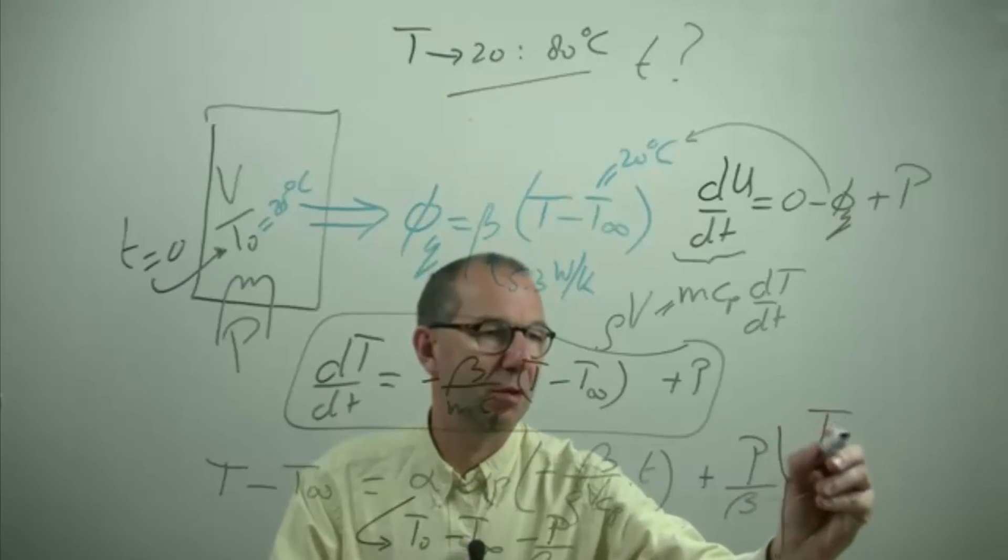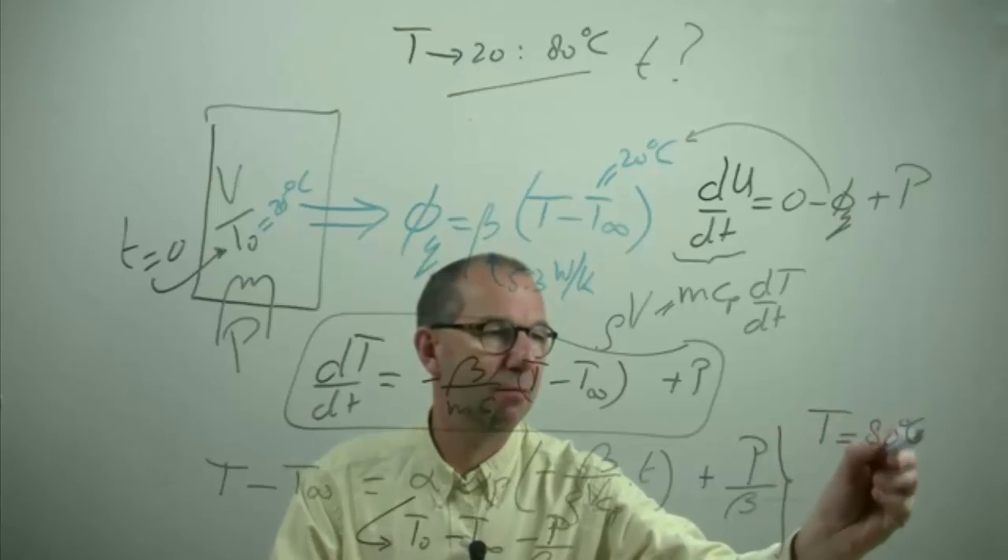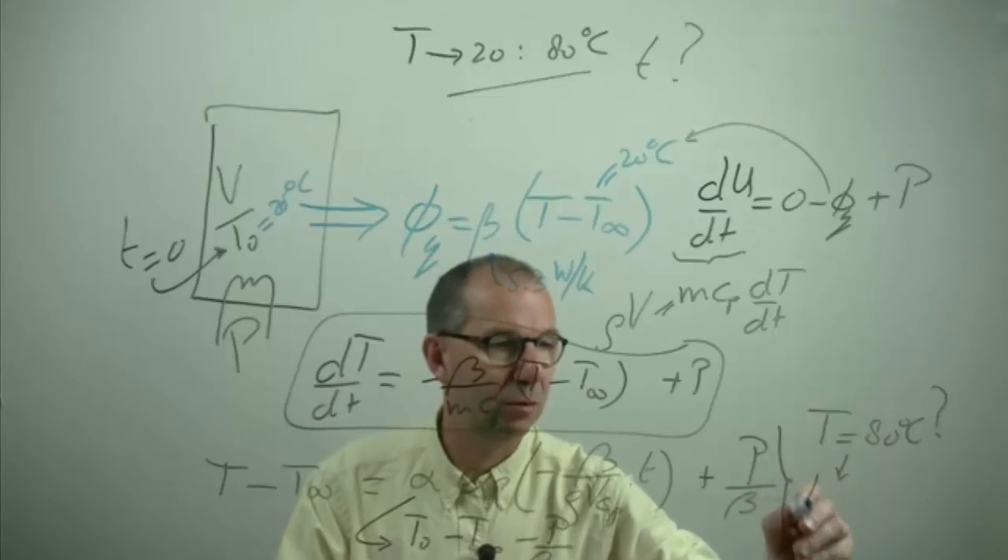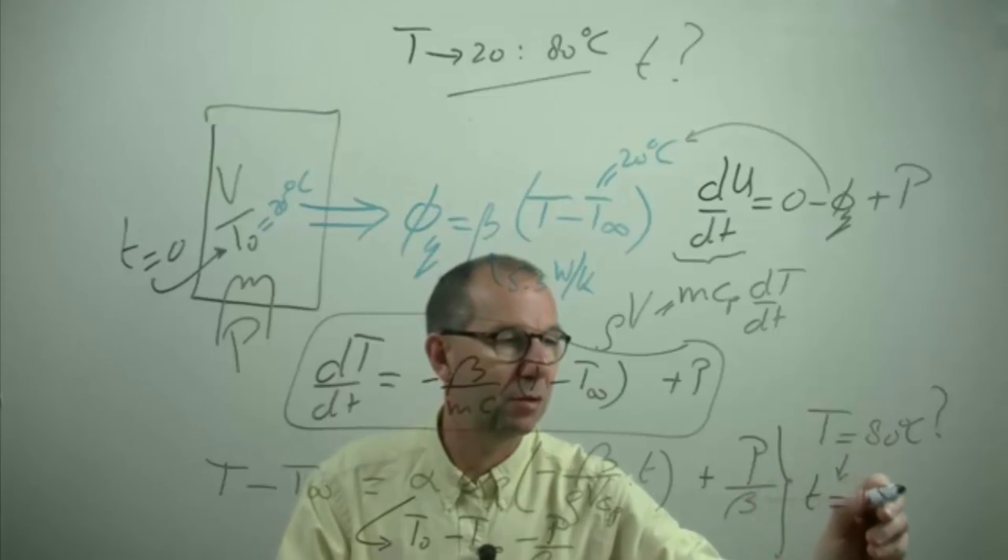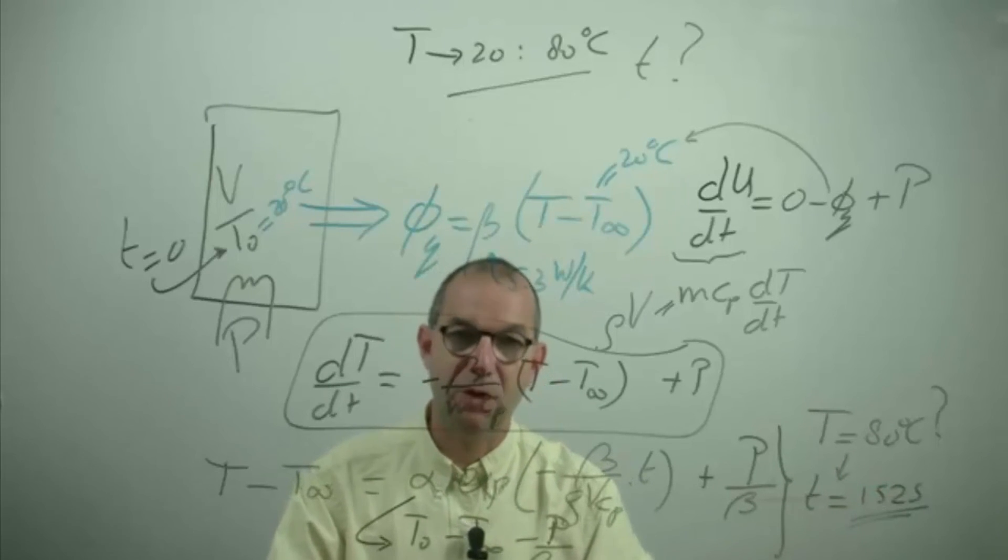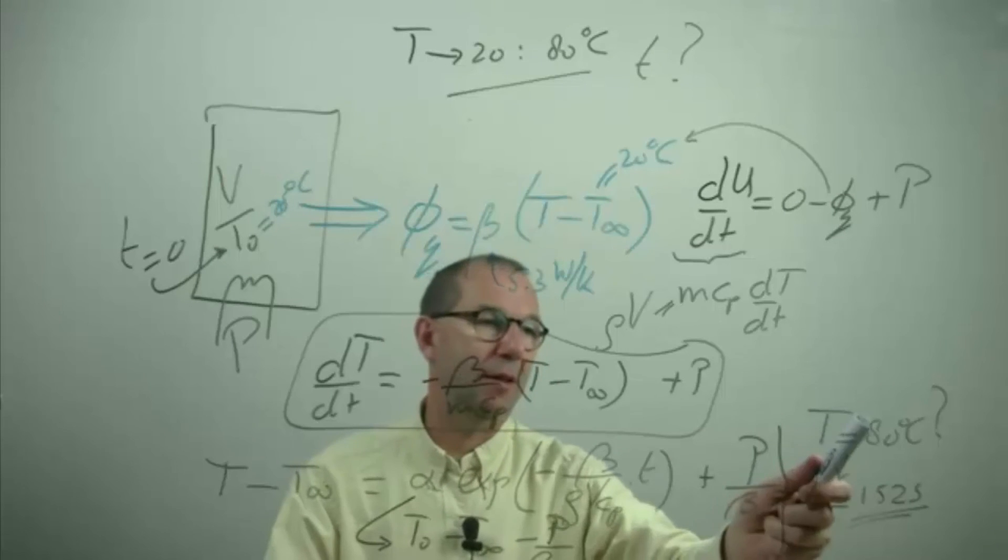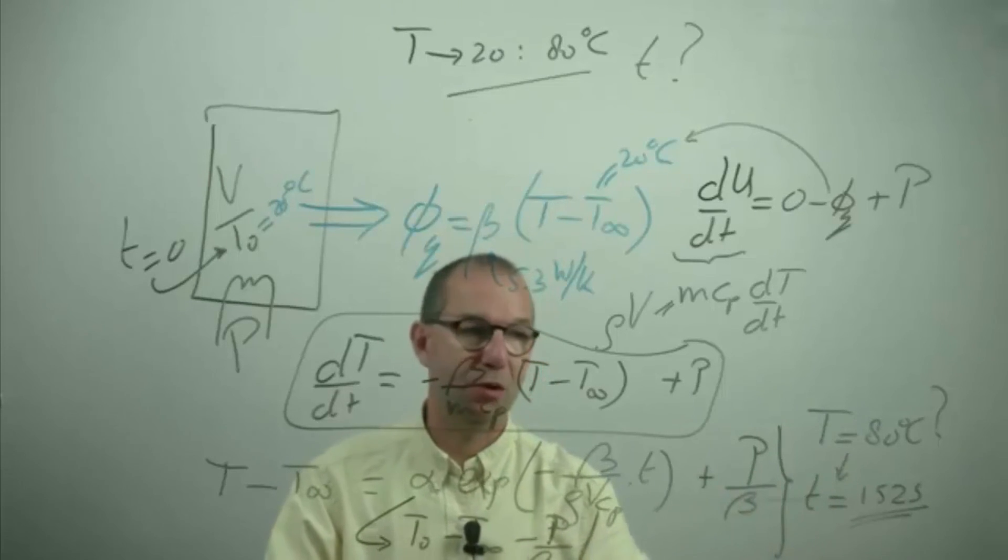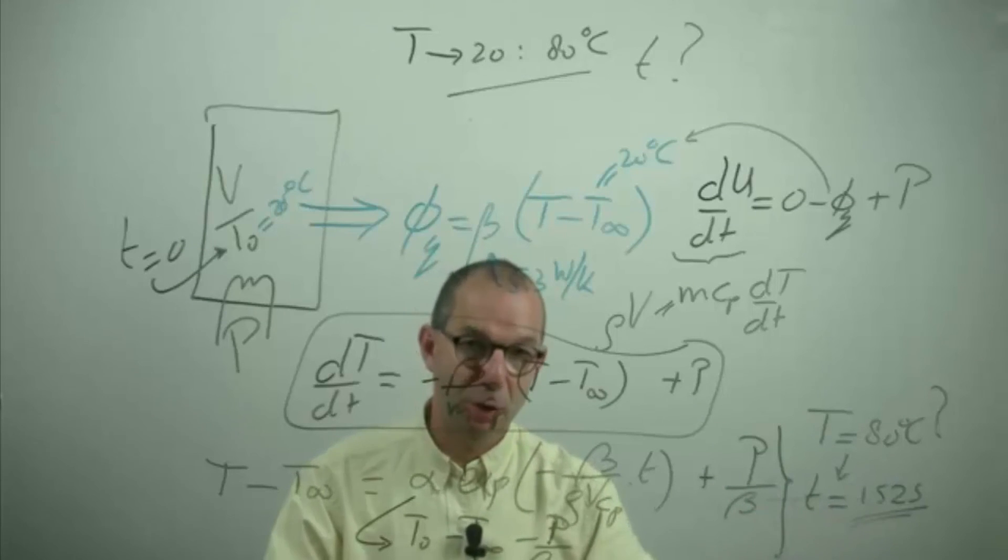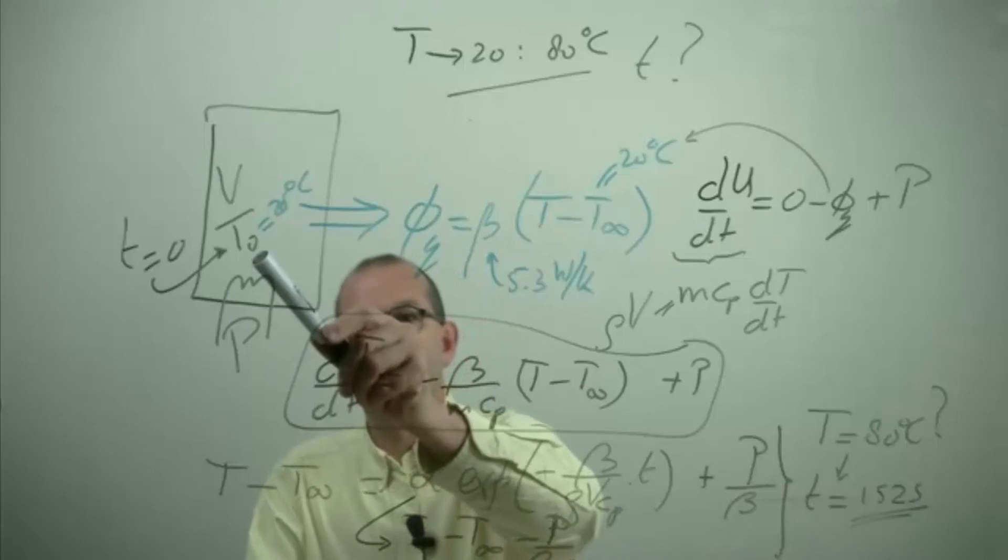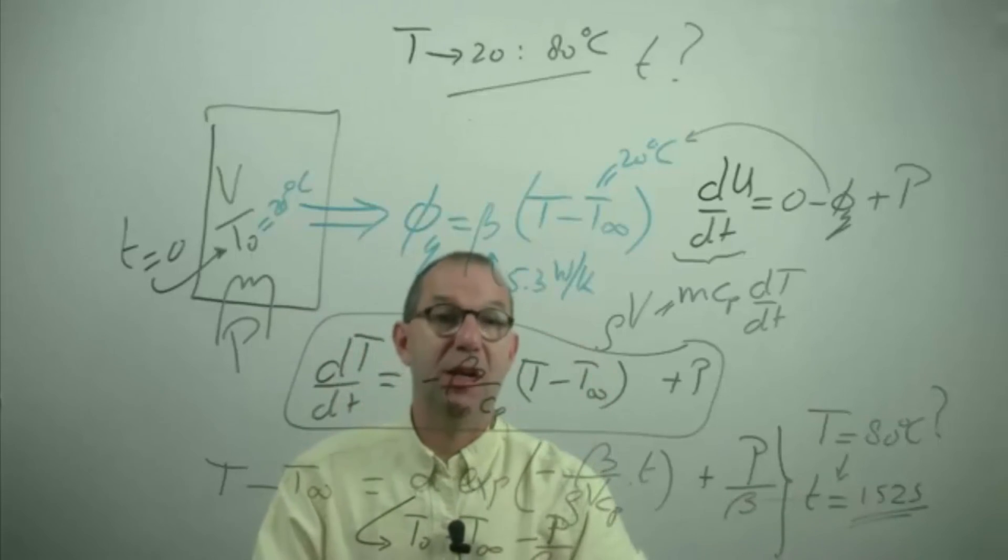When is the temperature 80 degrees? For that you need now to wait 152 seconds, which is substantially longer than in the previous case when we even let the temperature go to 100 degrees but there were no loss terms. So you see that the loss term slows down the entire process, which is logical. You put in heat but it flows out so it's less effective.